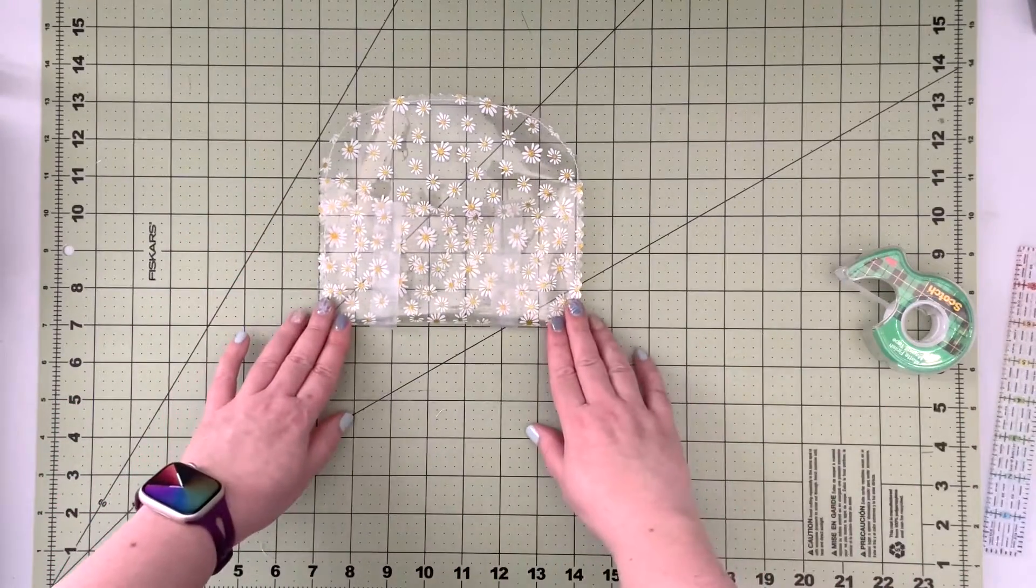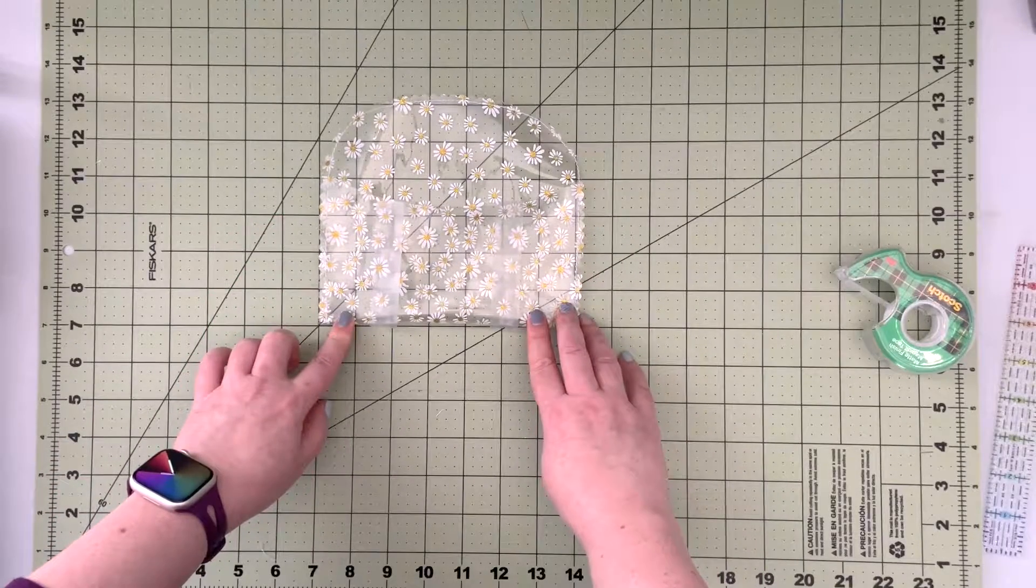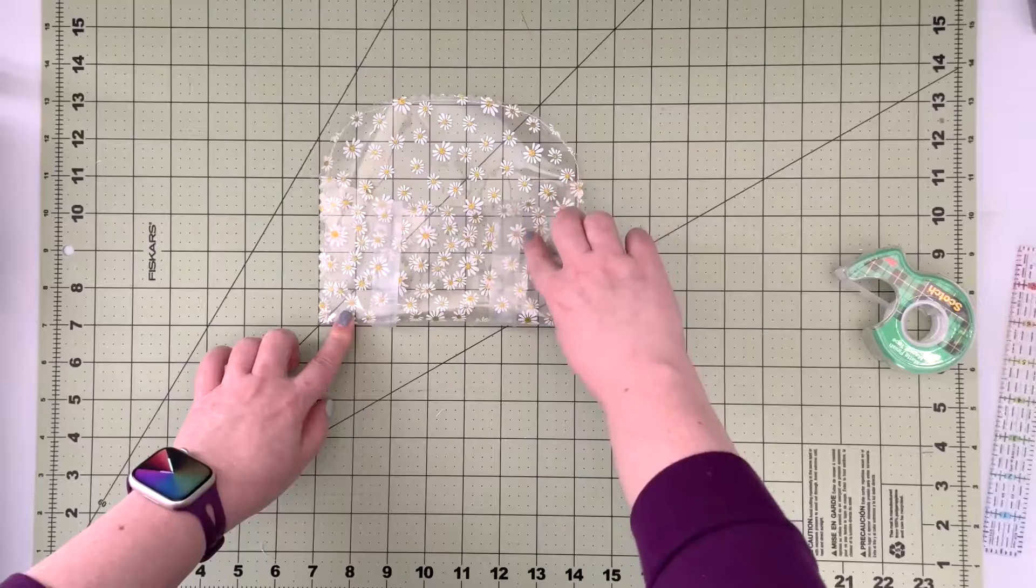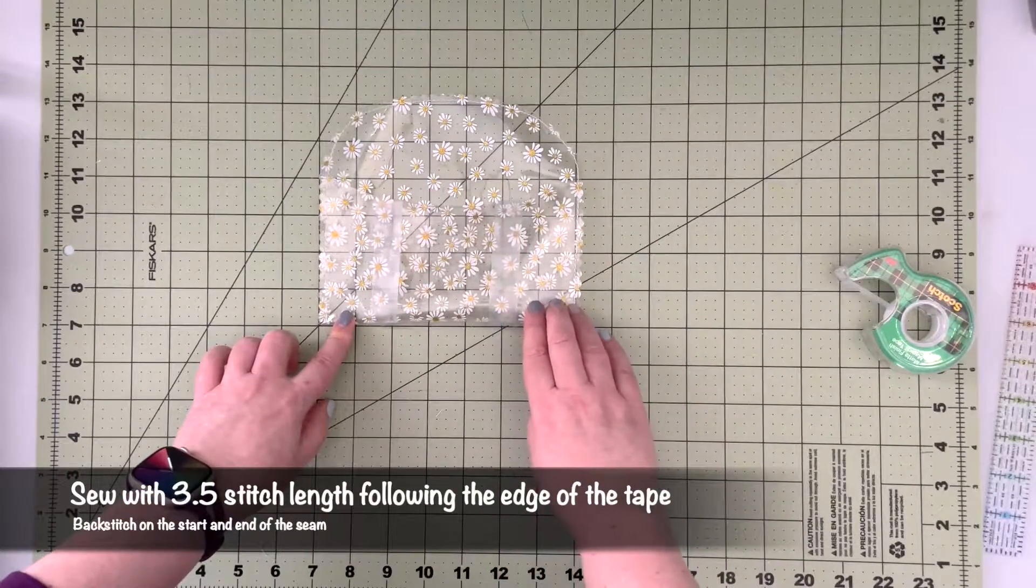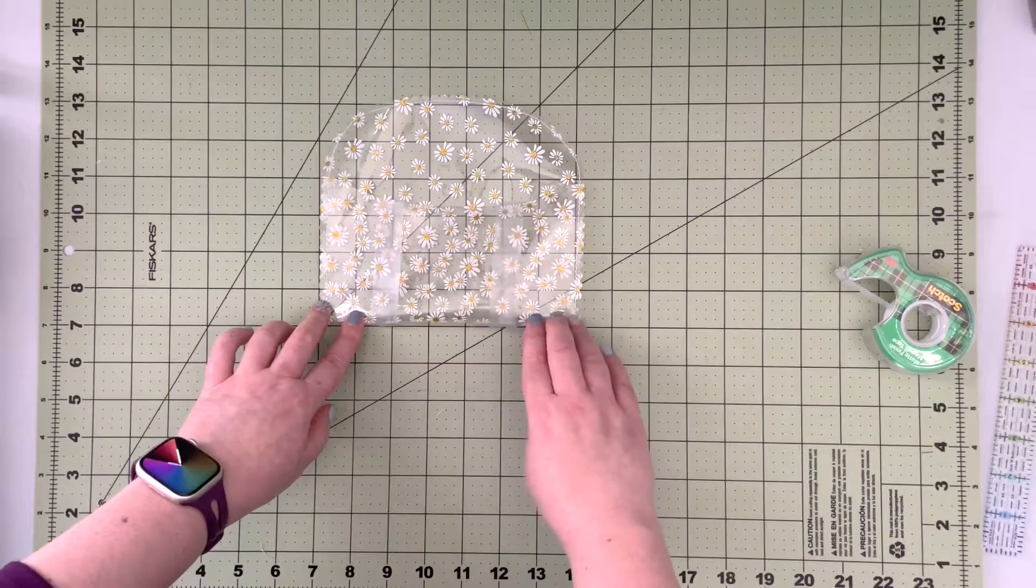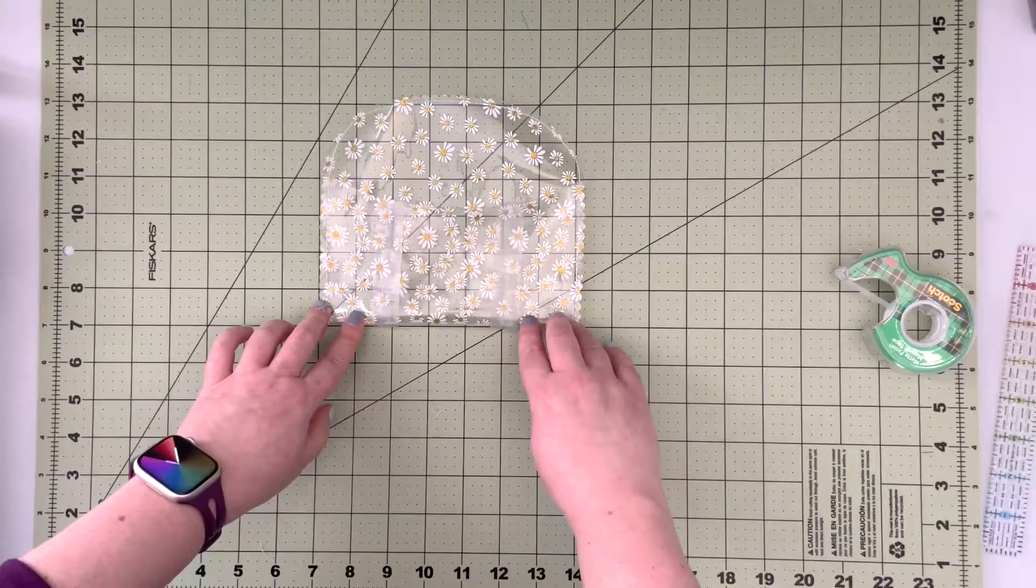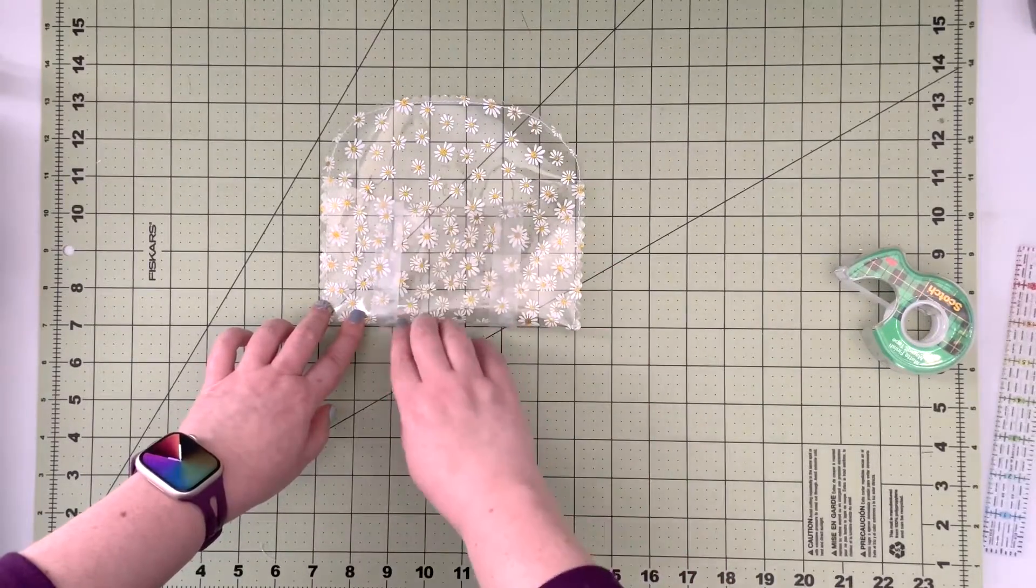And now that I have my seam lines marked I'm gonna take my project back to the machine and I'm gonna sew just outside of my scotch tape line to create three packets in my pouch. You're gonna be sewing with a 3.5 stitch length making sure you are back stitching well on the beginning and on the end.